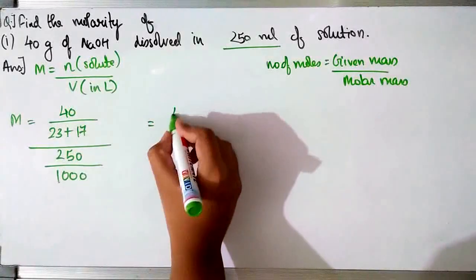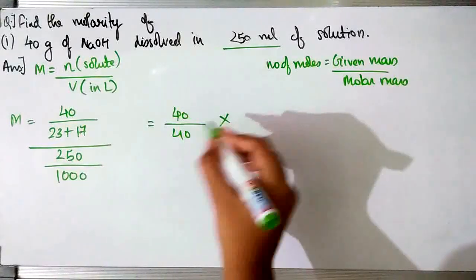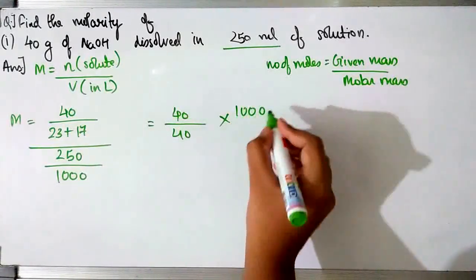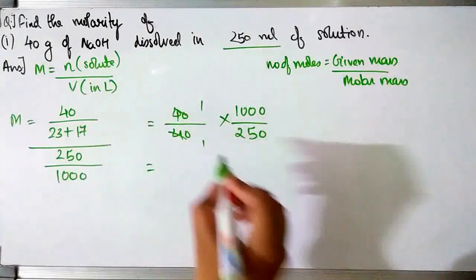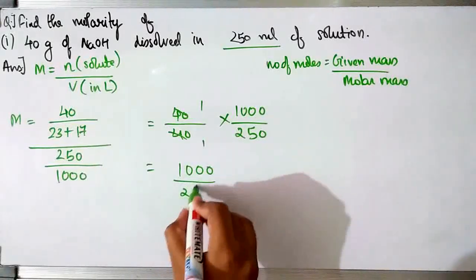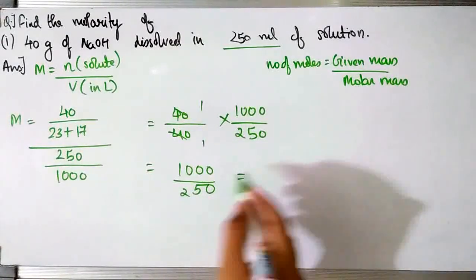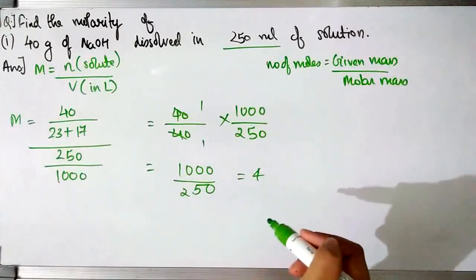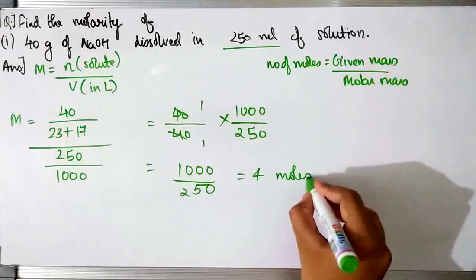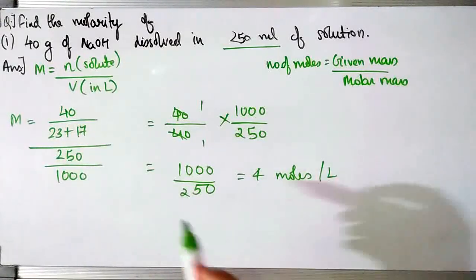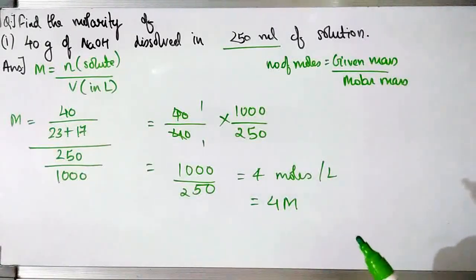Now we have to solve this. This becomes 40 by 30, and then 40 into 1000 by 250, which simplifies so that 1000 by 250 gives 4. So the result is 4 moles per litre. Your molarity here is 4 moles per litre, or you can write it as 4M.